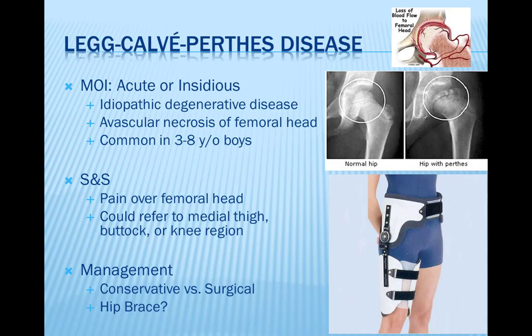Legg-Calvé-Perthes disease is avascular necrosis of the proximal femoral head resulting from compromise of the continuous blood supply to this area. Without sufficient blood flow, the bone begins to die, breaks more easily, and heals poorly. The disease has an insidious onset and may occur after injury to the hip. Risk factors include age — most commonly affecting children ages 3 through 8 — gender, as it is five times more common in boys than girls, and race, as Caucasian children are more likely to develop the disorder. Family history is also a factor in a small number of cases.